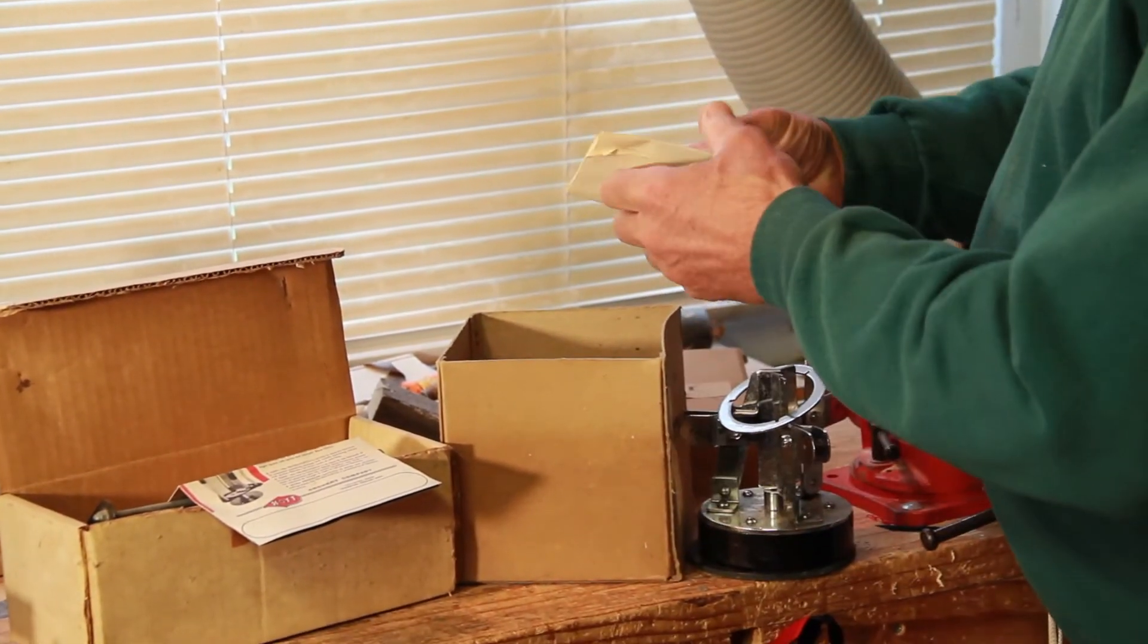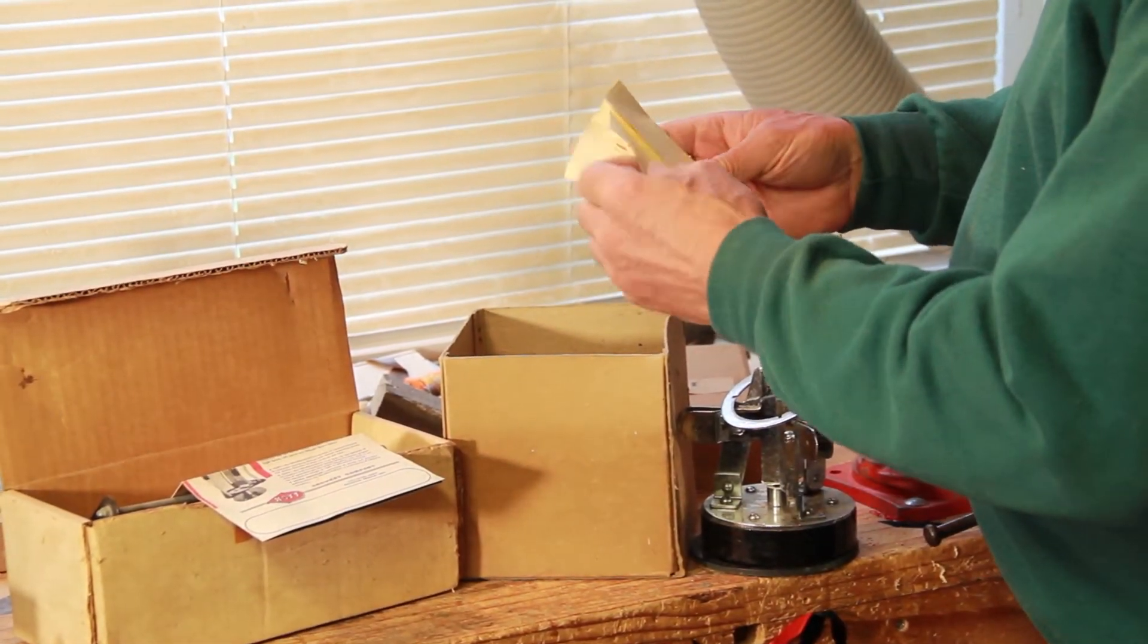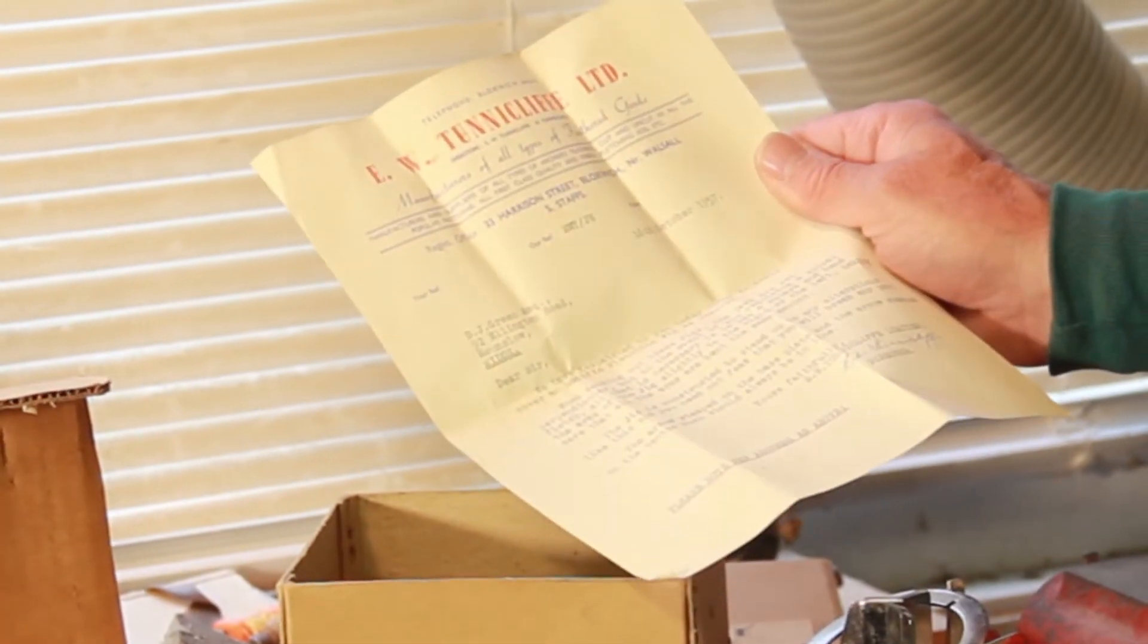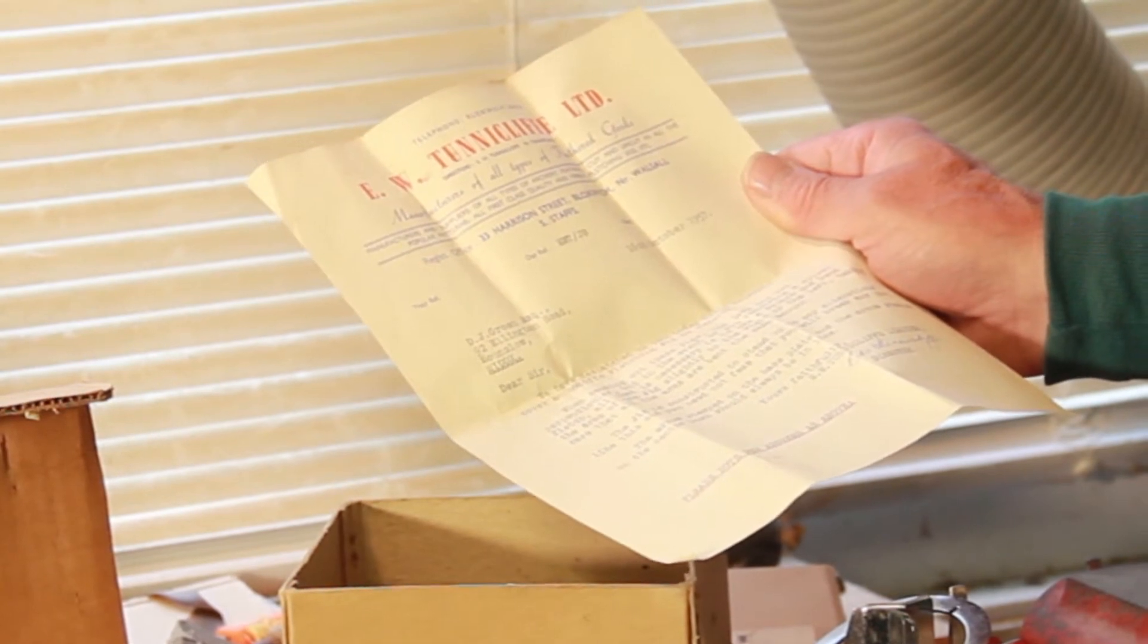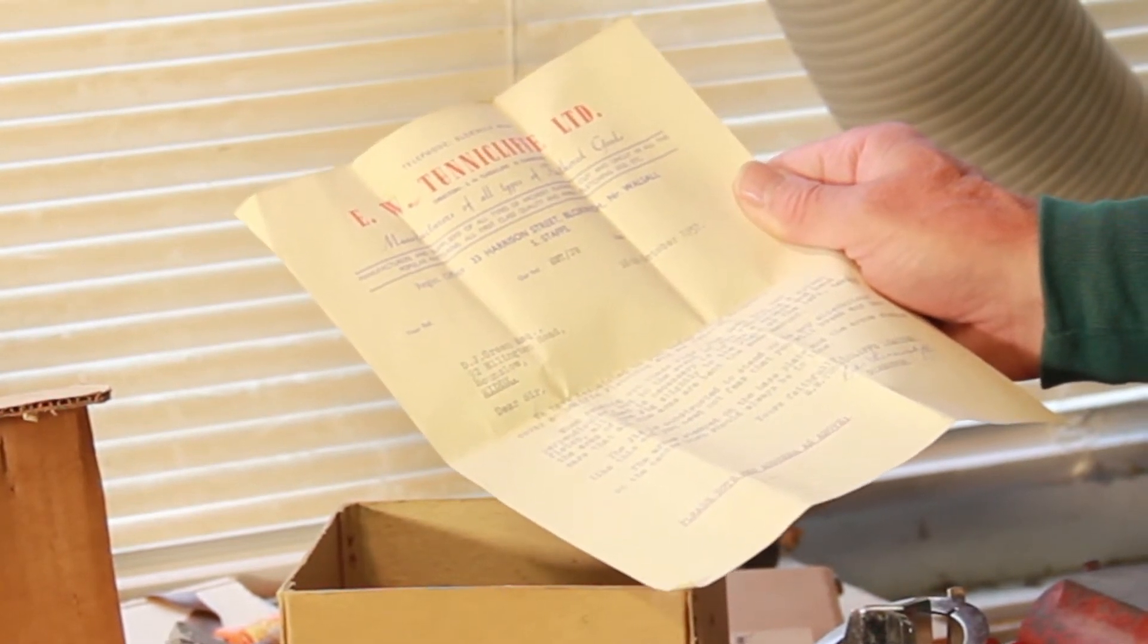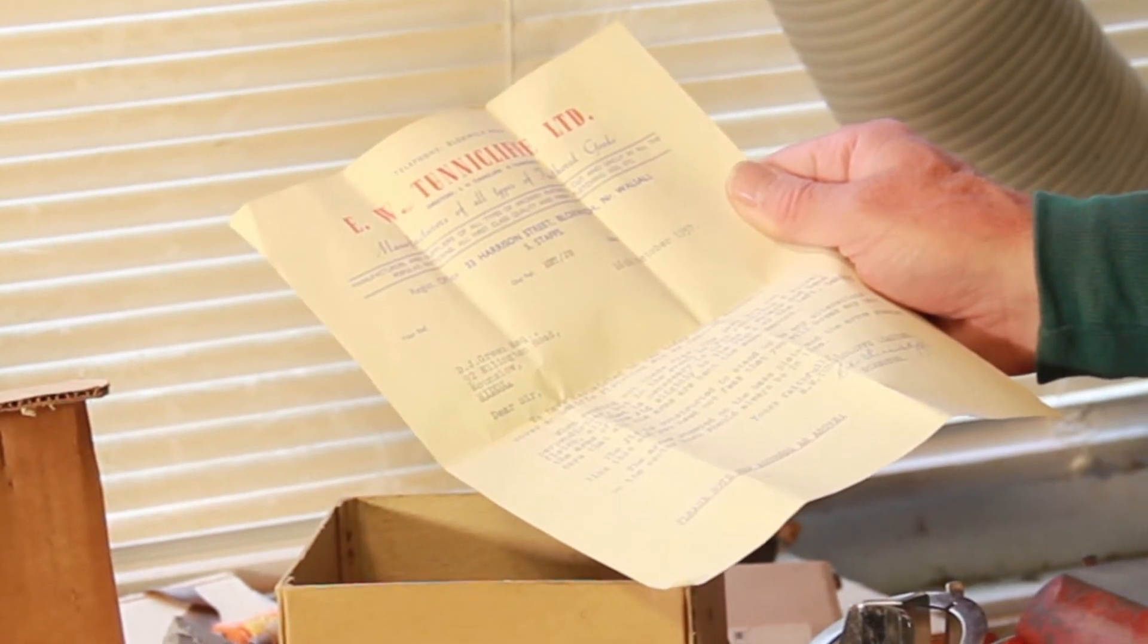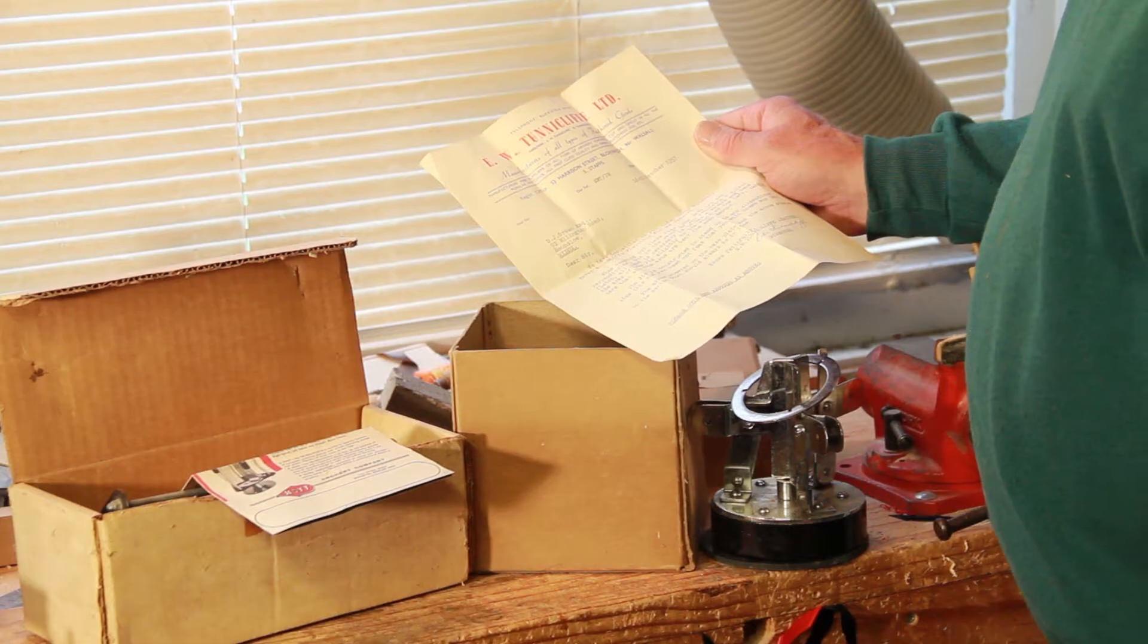That came with a letter from E.W. Tunnicliffe Limited, manufacturers of all types of feathered goods, manufacturers and suppliers of all types of archery feathers, cut and uncut, in all the popular patterns. All first class quality and finish, fletching jigs, etc.